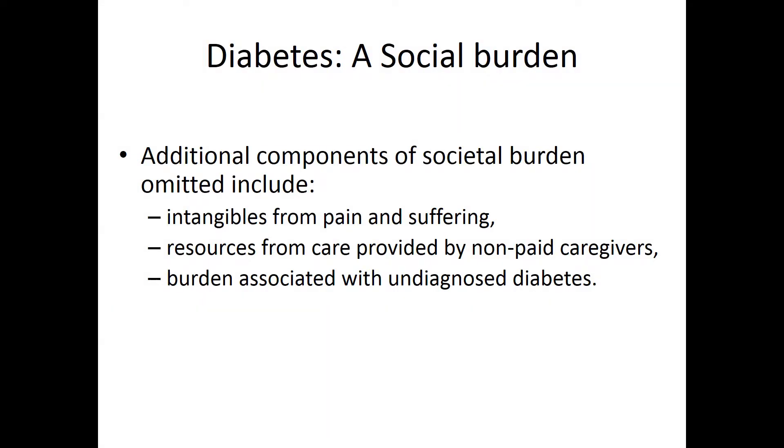Diabetes is very much a social burden. Components omitted from previous analyses include intangibles from pain and suffering, resources from unpaid caregivers, and the burden of undiagnosed diabetes. For example, a well-established physician came in with a near-MI requiring a CABG, and his A1C was 10. He mentioned that a year prior his A1C was 7.2 — but he did nothing about it, assuming it would go away. A year later he had an MI at about 40 years old. Had he acted earlier, he might not have required a CABG.